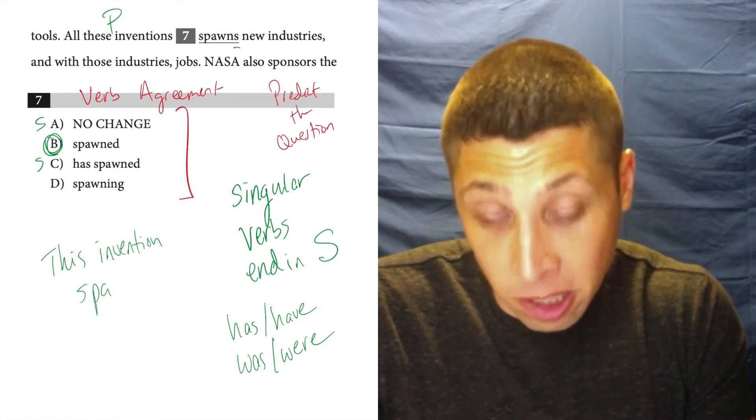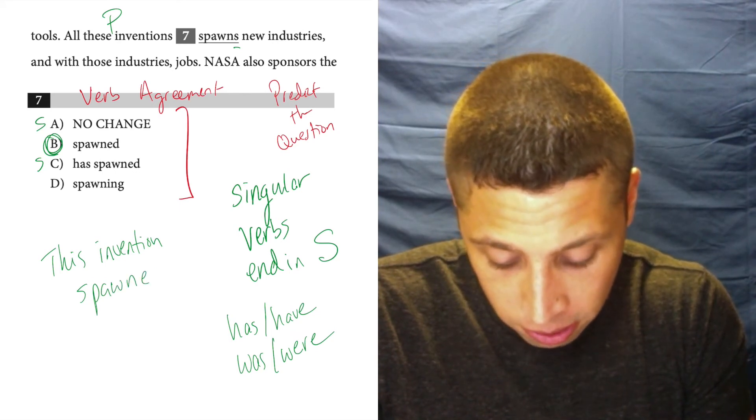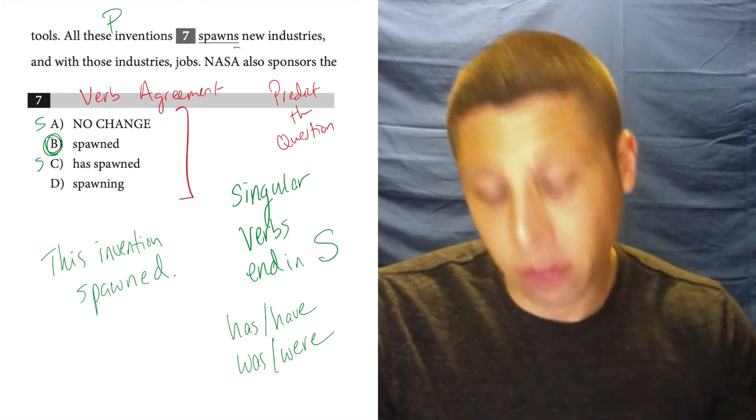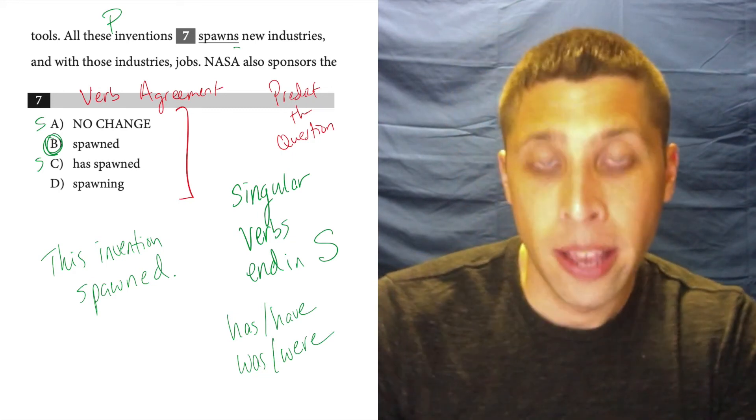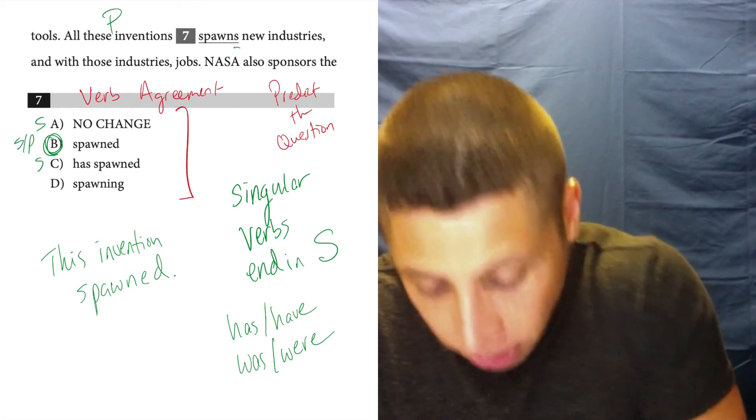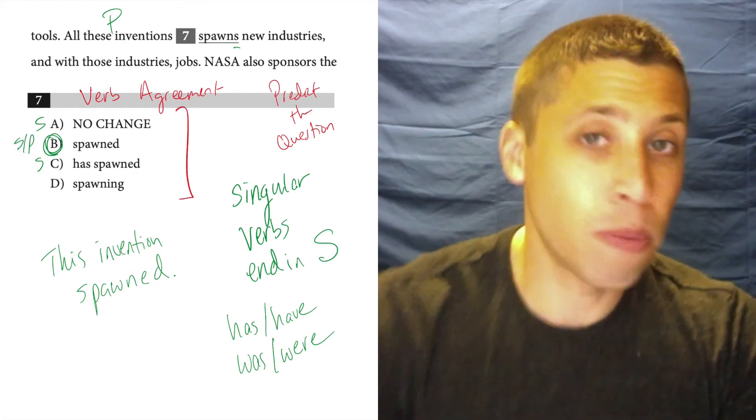then we would say spawns, or we could still say spawned new industries, right? This invention spawned. So here's my proof that a word like spawned, it's not that it's singular or plural, it's that it kind of functions as both, and that's what makes it right here.